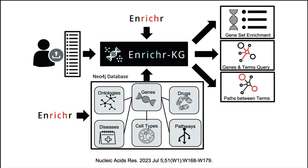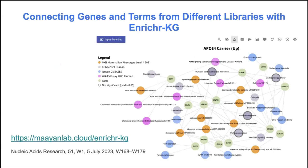Something new in Enrichr KG is the ability to look at paths between terms or genes. For example, if you have two genes, you can find the overlapping terms that connect them. Or if you have two annotated terms, you can find the overlapping genes between those two terms and visualize them using this feature.